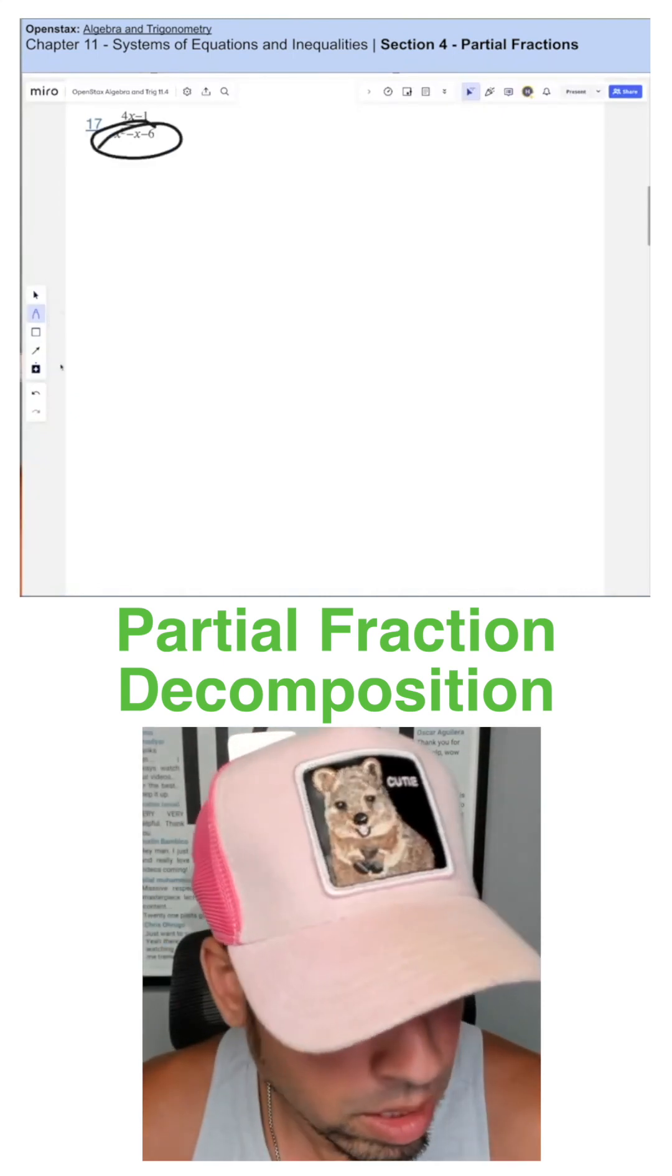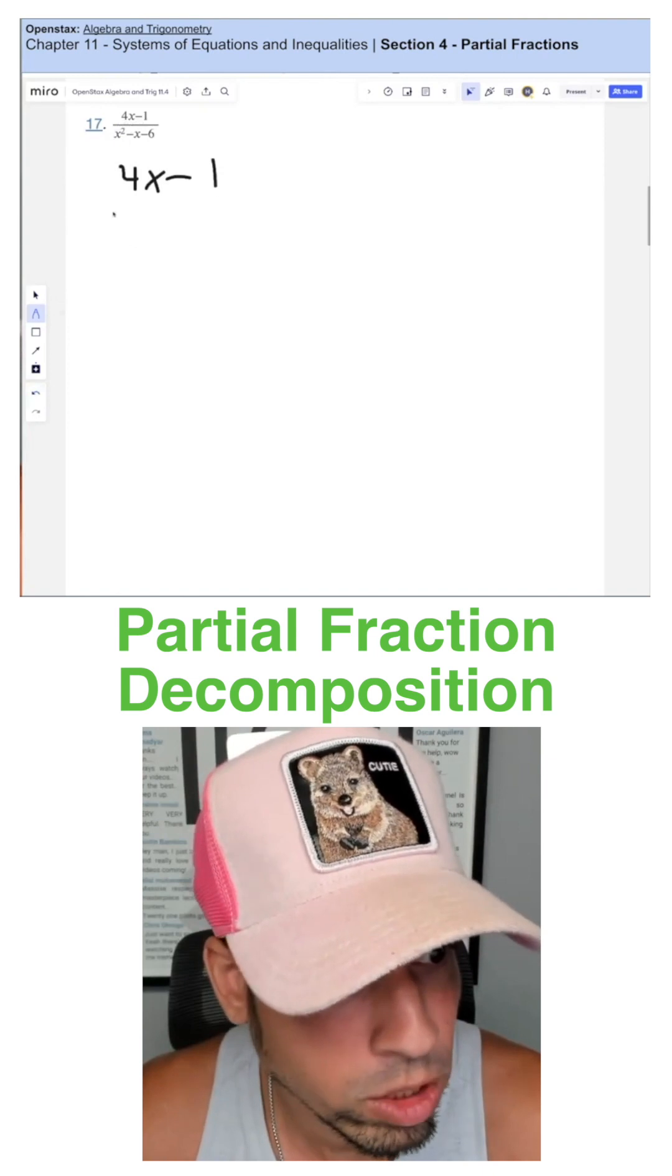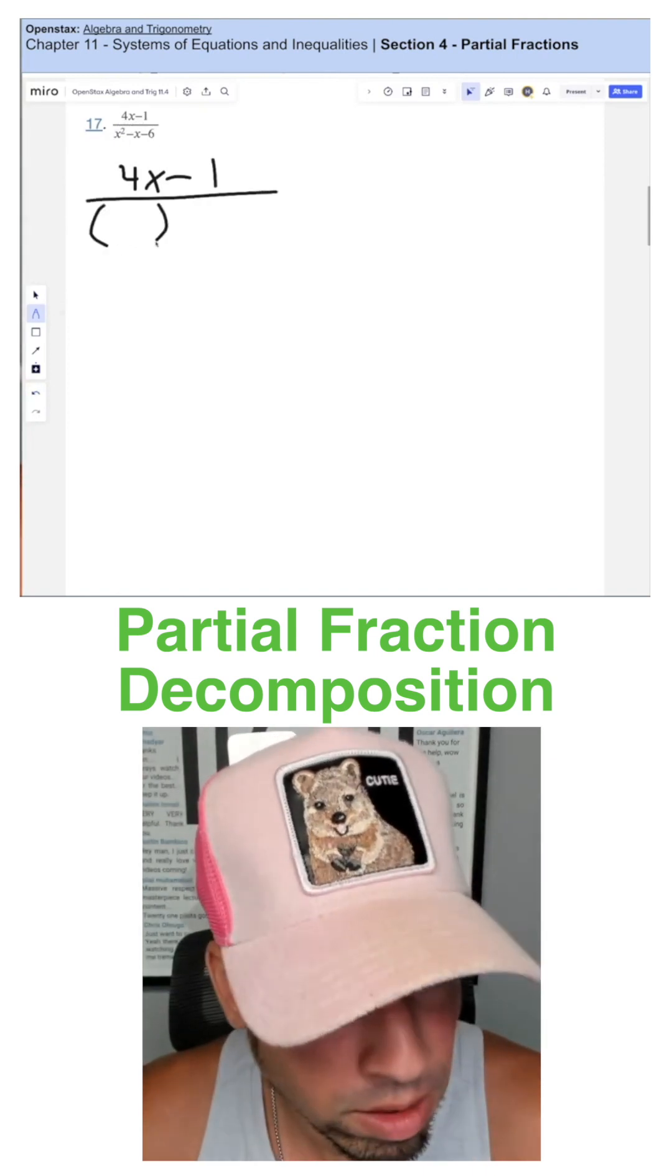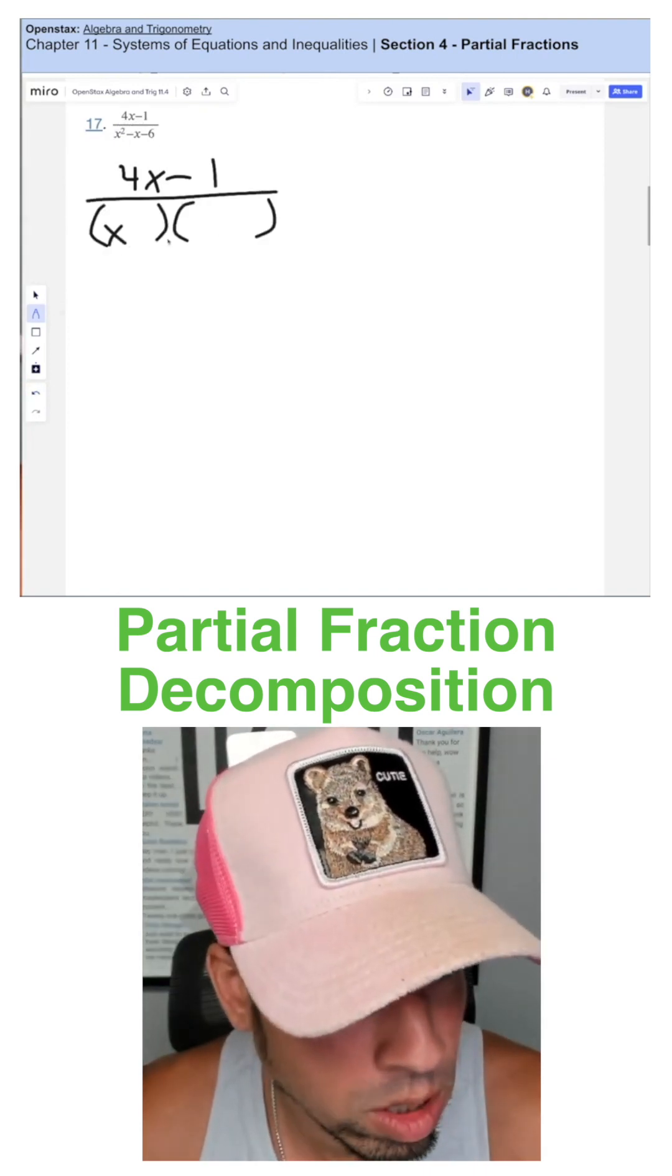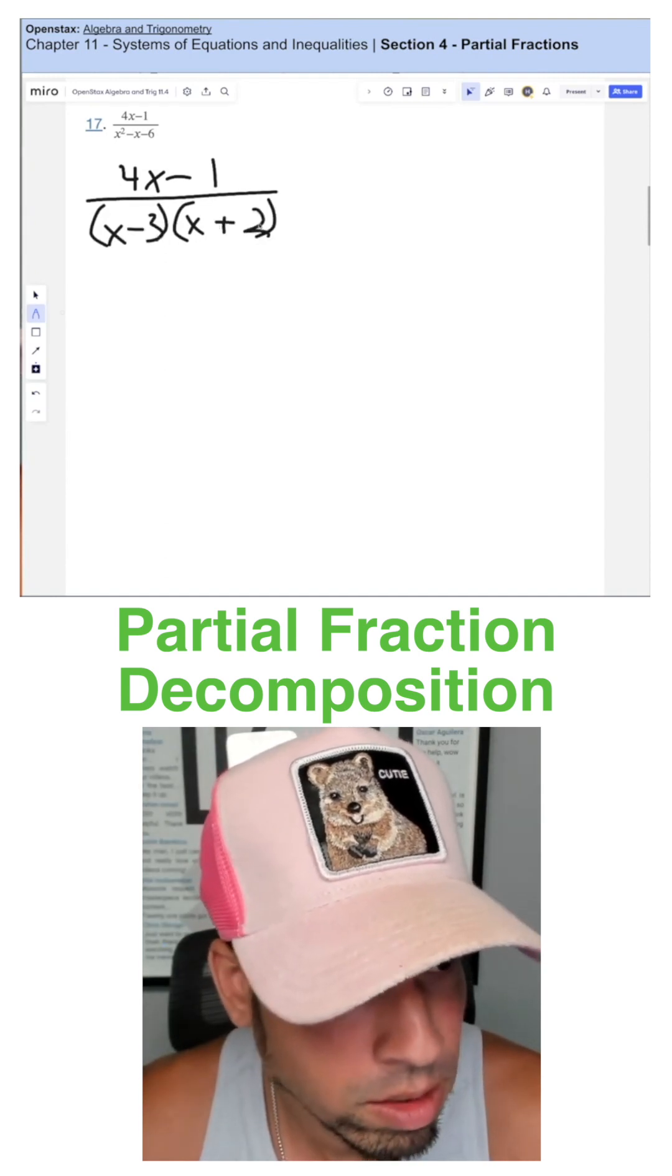This one, we're going to start once again by seeing if we can factor that denominator, which we can, right? What two numbers multiply to negative six and add to negative one? That is going to be negative three and positive two.